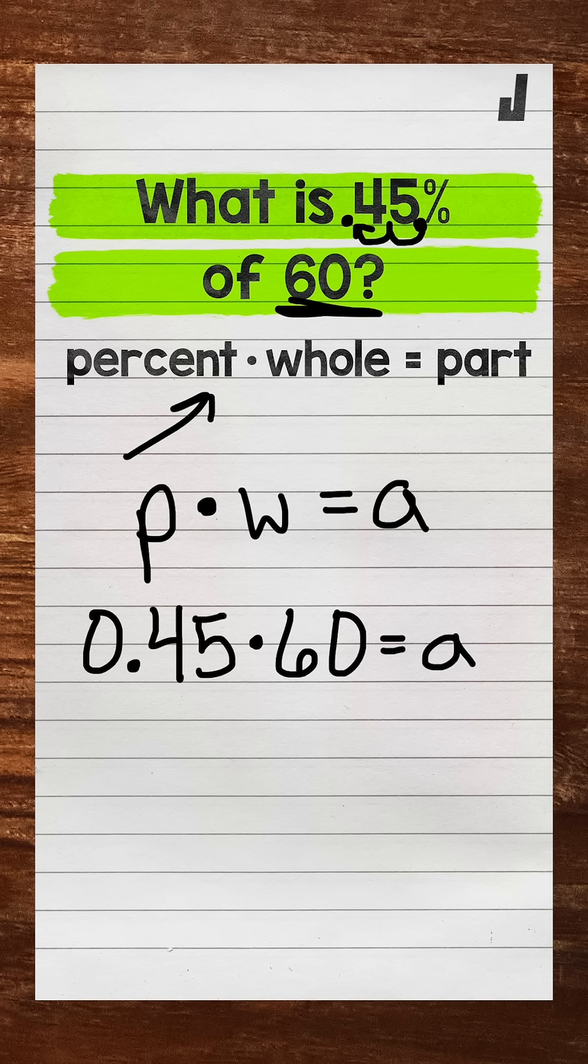Now we just have a one-step equation where the variable is already isolated. So the part equals, and on the left side of the equation, all we need to do is 45 hundredths times 60. That gives us 27.